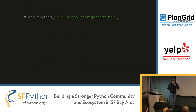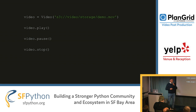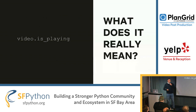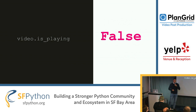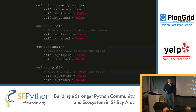So we go ahead and create an instance of the video. We can play the video, we can pause the video, we can stop the video, and we can even check if the video is playing or not. But what does is_playing really mean? When it's true, it definitely means the video is playing. But what happens when it's false? Is it paused, or is it stopped? In reality, we don't have enough information to answer this question.